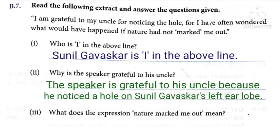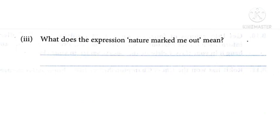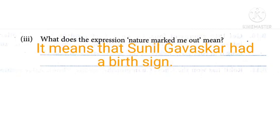Question number three: what does the expression 'nature marked me out' mean? This expression means that Sunil Gavaskar had a birth sign — something different from others. So 'nature marked me out' means having something different from others. If Sunil Gavaskar had not had a birth sign, the babies would have been exchanged and nobody would have come to know. So 'nature marked me out' means having a birth sign.